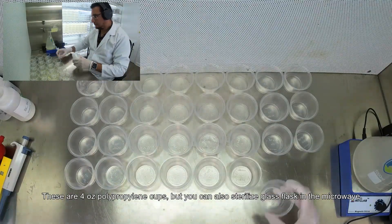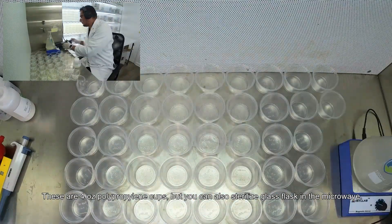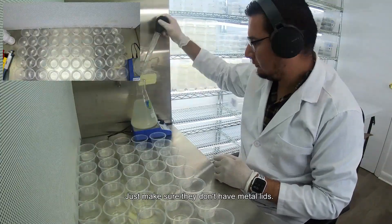These are 4-ounce polypropylene cups, but you can also sterilize glass flasks in the microwave. Just make sure they don't have metal lids.